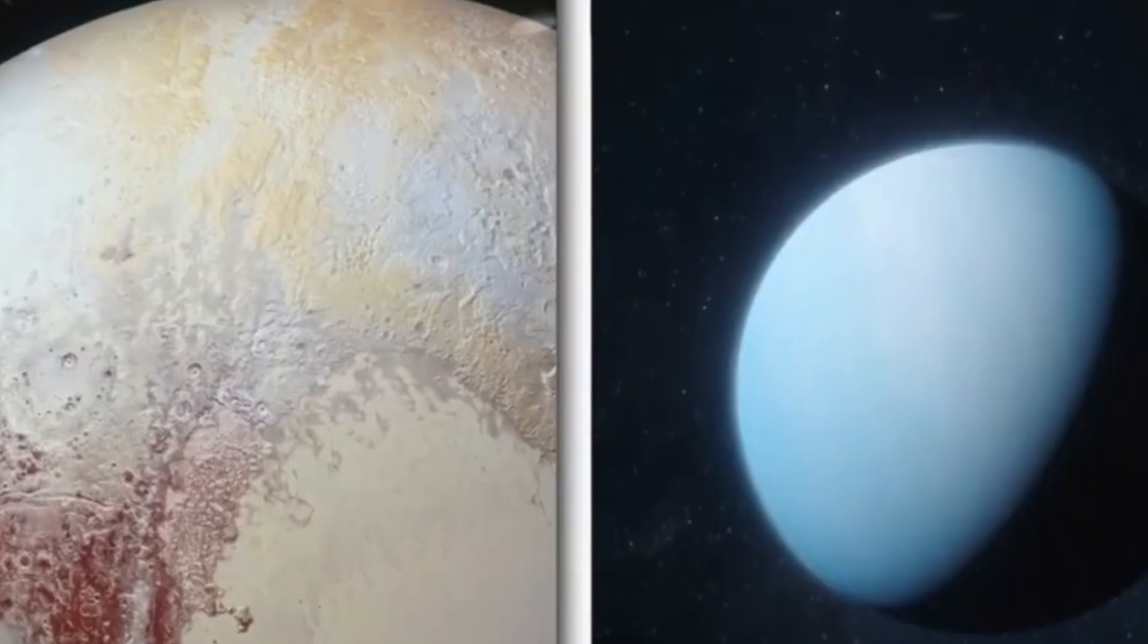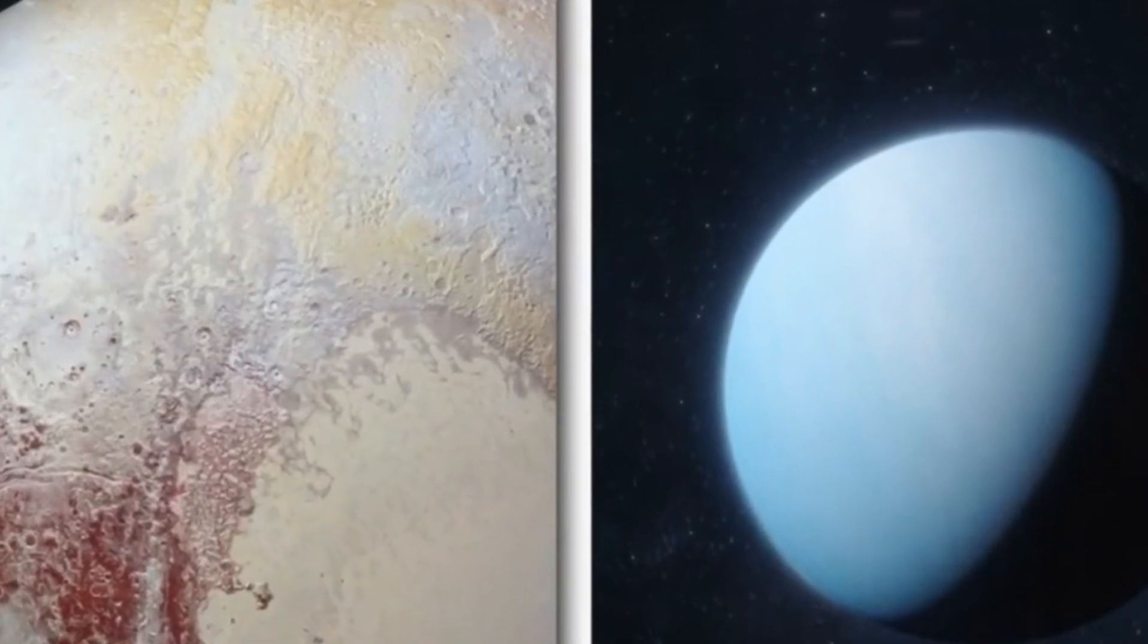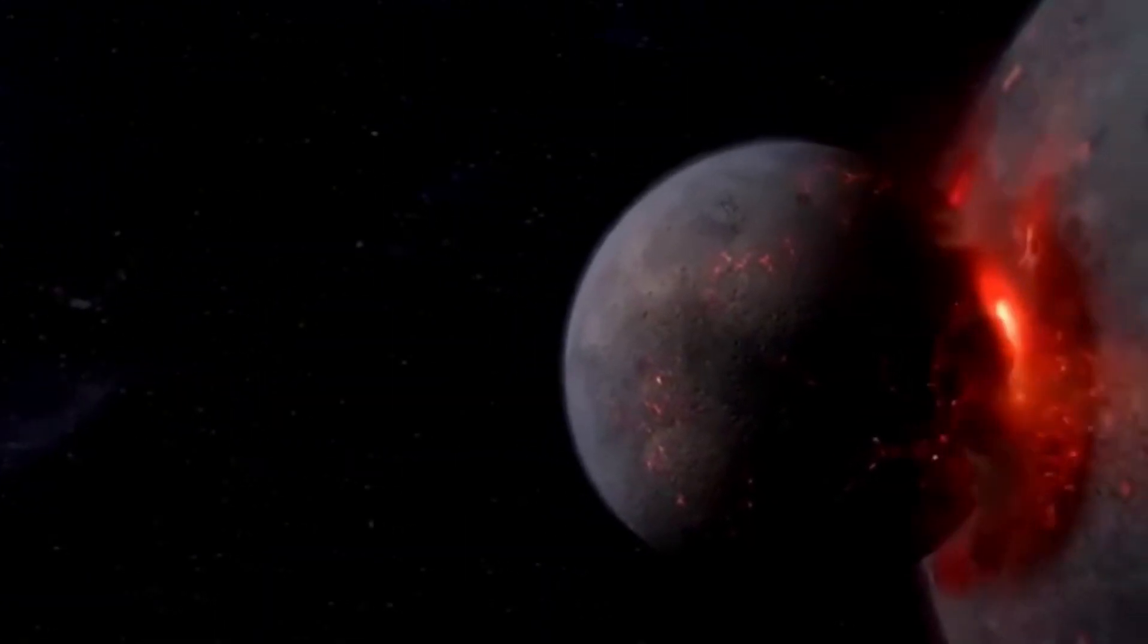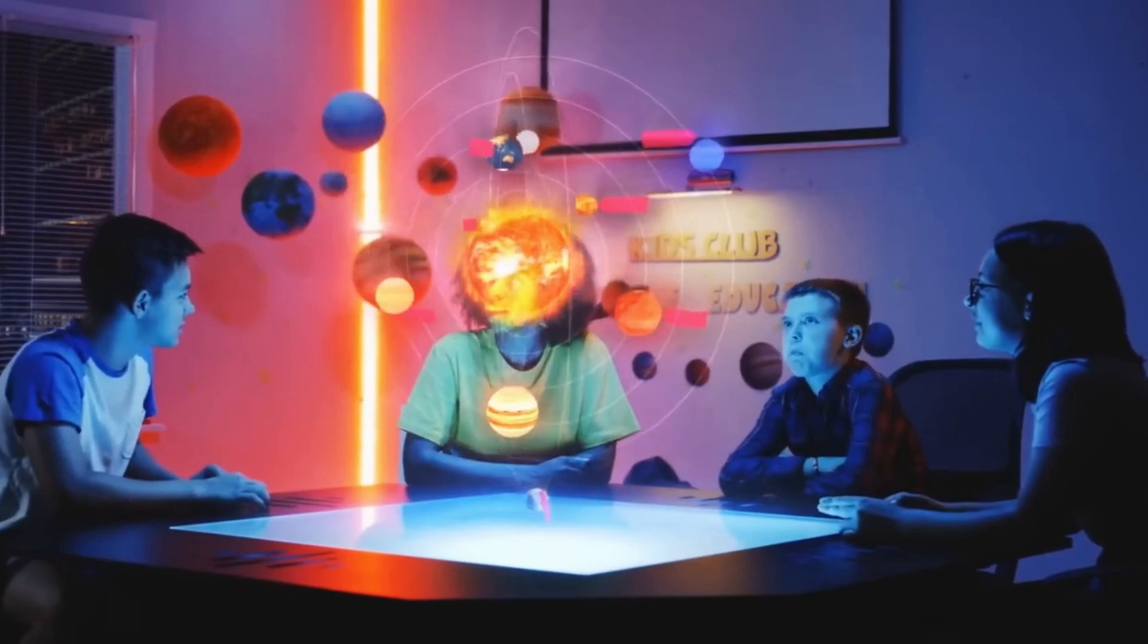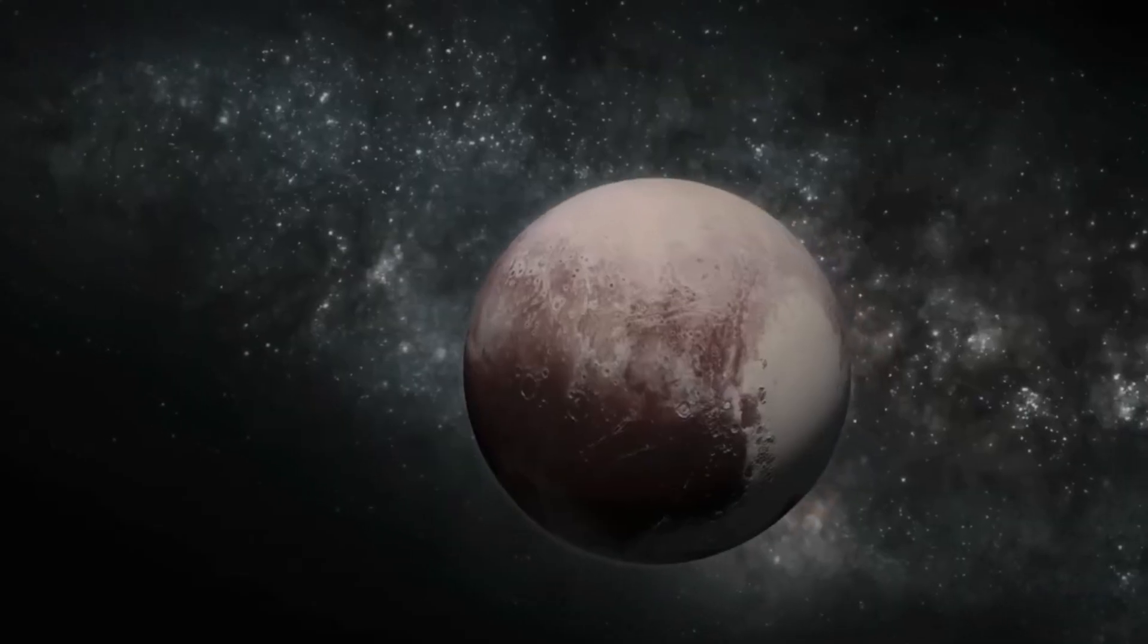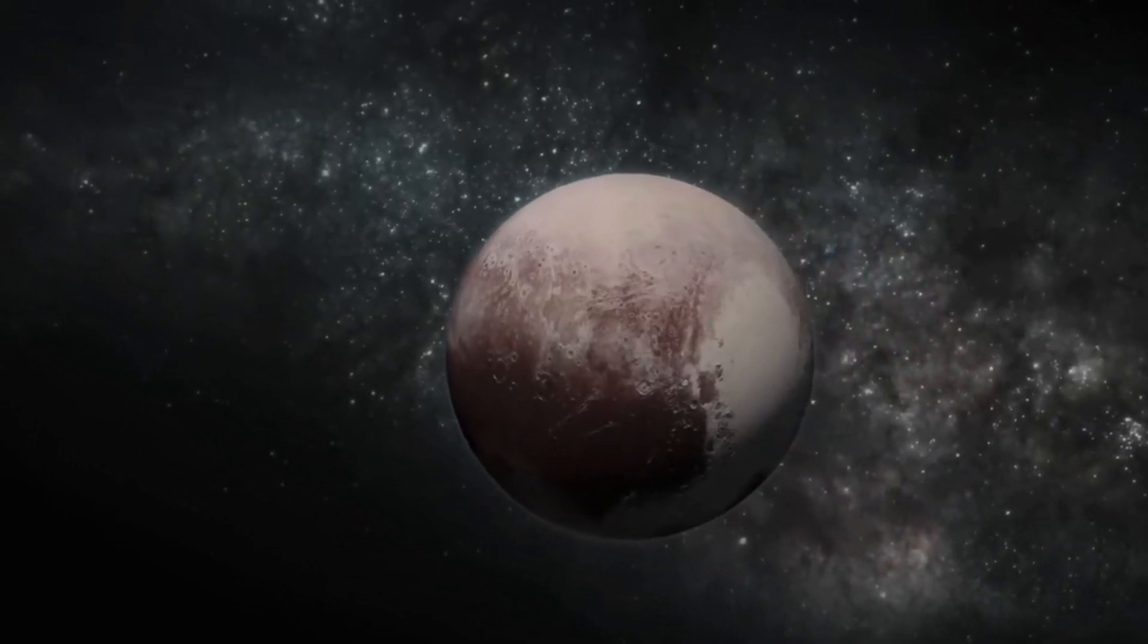Pluto, a former planet demoted to a dwarf planet partly due to its peculiar orbit, remains a subject of fascination and study in the astronomical community. According to recent predictions by leading scientists, Pluto's trajectory is dangerously close to Neptune's.